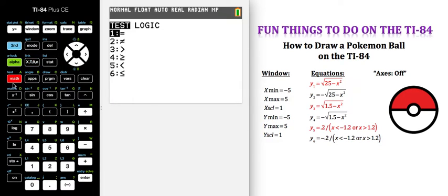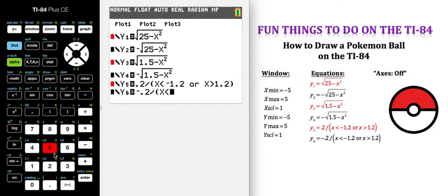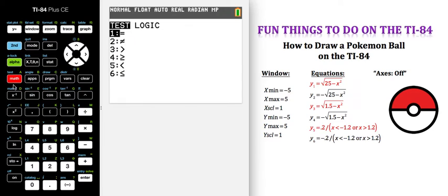Second test gets you to the inequalities, I want less than, negative 1.2. I need the logic symbol for or, so that is second test, arrow to the right for the logic menu and down to two.